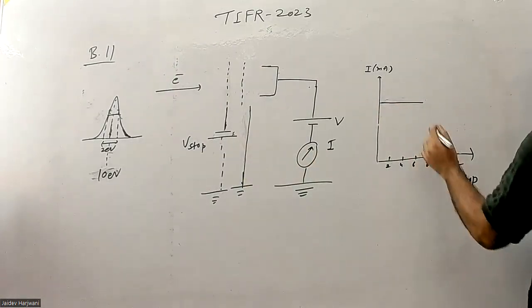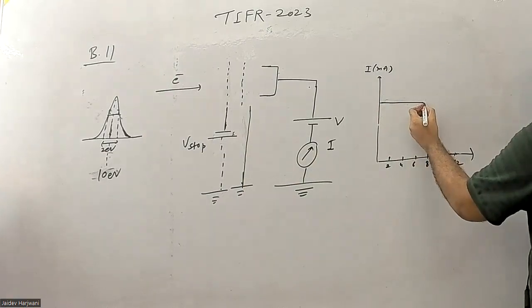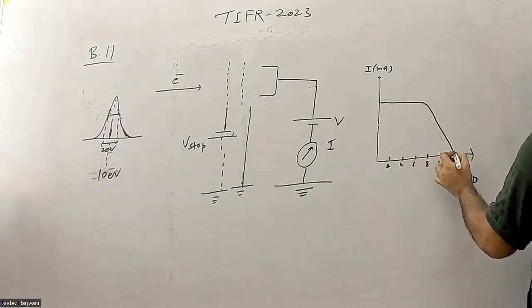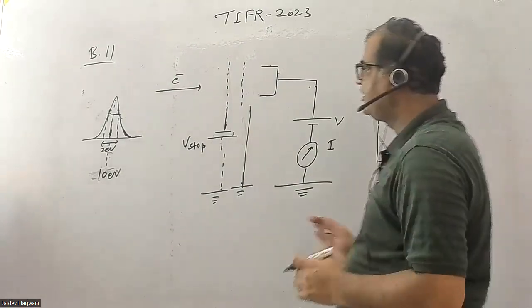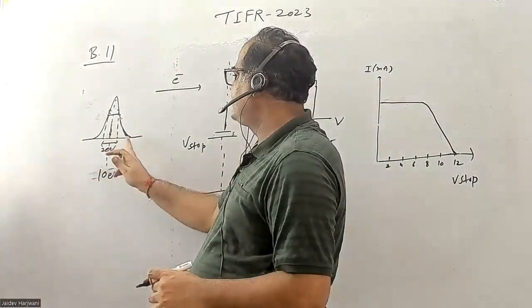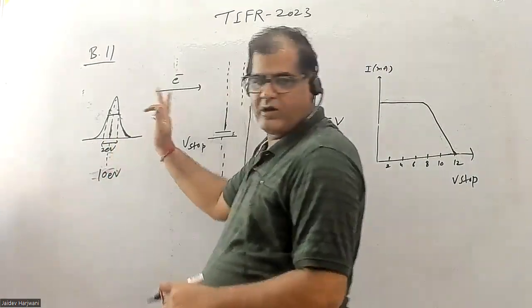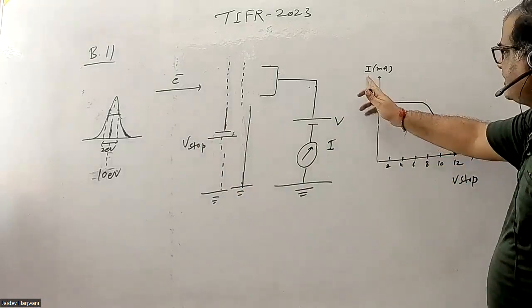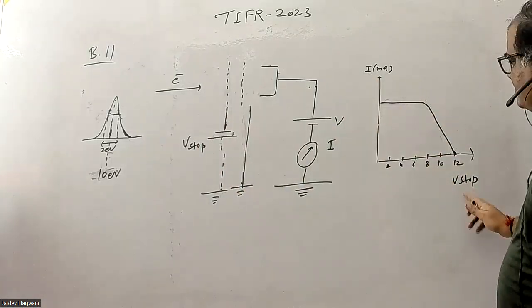Beyond 8 volts, the current will start decreasing, and at around 12 volts all the electrons from minimum energy to maximum energy will stop and current will become zero. This is the experimental curve for I versus V_stop.